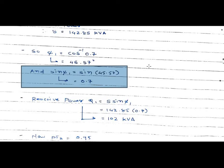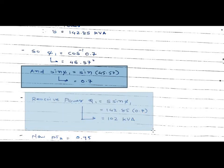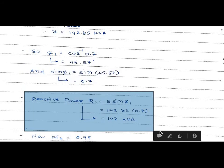Reactive power Q1 is equal to S times sine phi 1. This is the reactive power corresponding to the power factor of 0.7. Putting the values of S and sine phi 1 into this equation, we get 142.85 multiplied by 0.7. The value of reactive power Q1 is given by 102 KVAR.